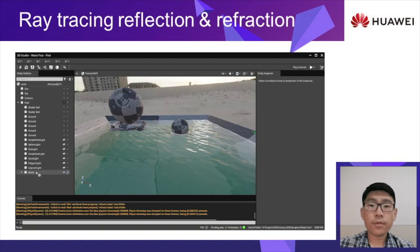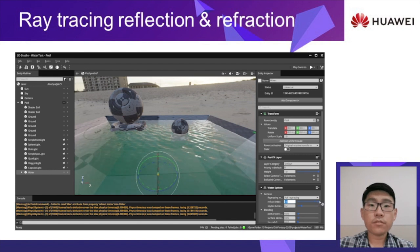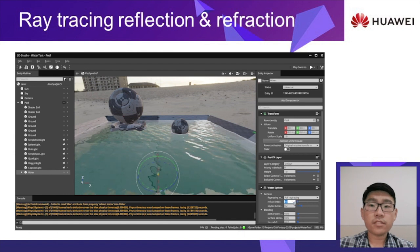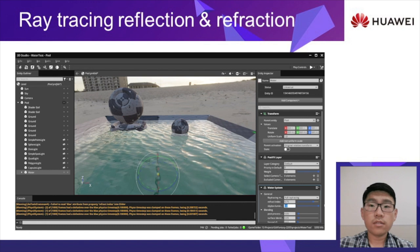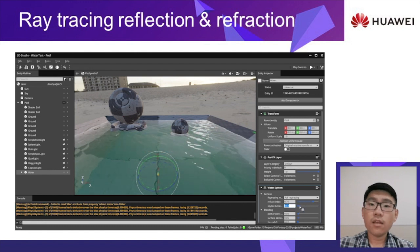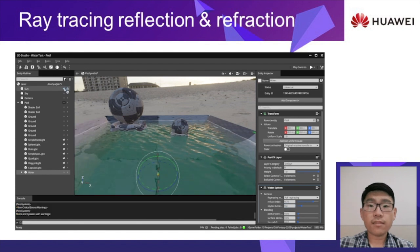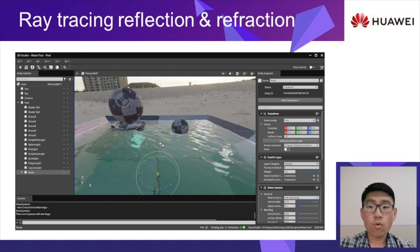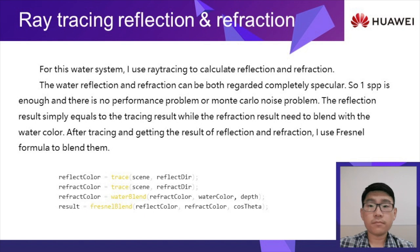Then we come to the core rendering method. For this water system, I use ray tracing to calculate reflection and refraction. When shading one pixel on the water surface, trace along the reflect direction and refract direction and get the direct shading result of those two points. For the ray which goes under the water, its result needs to be blended with the water color. After tracing and getting the result of reflection and refraction, I use the Fresnel formula to blend them. In this way, we can get the perfect refraction result as shown in the video. As for point lights and area lights, ray tracing is not needed at all — shading just as standard PBR is enough. Because only two tracing operations are needed per pixel, the performance is not affected much.